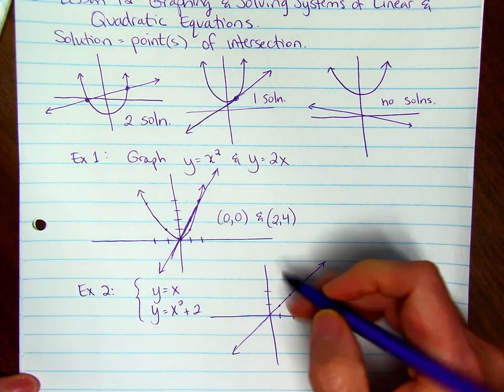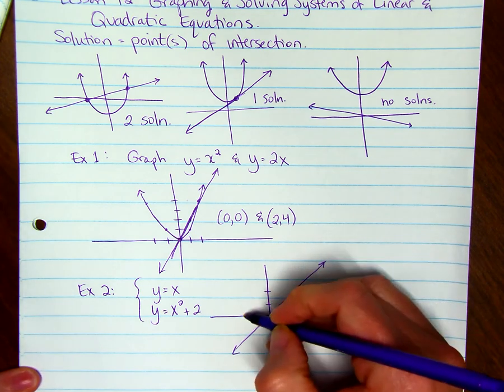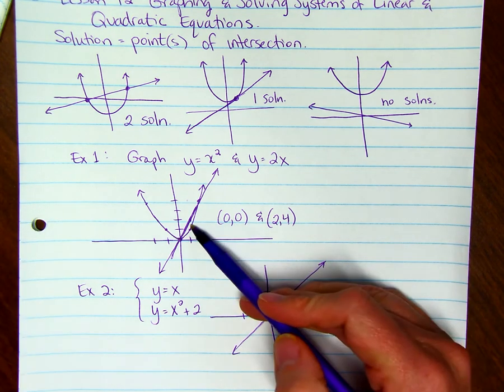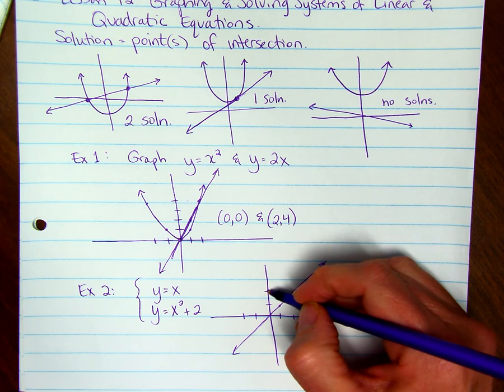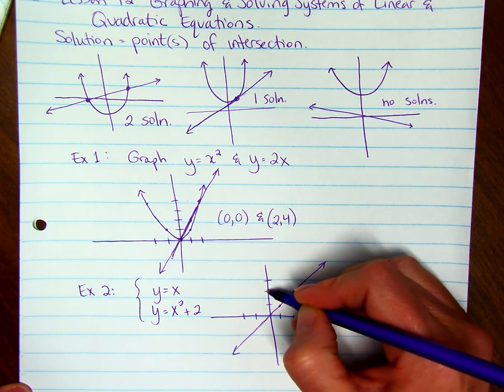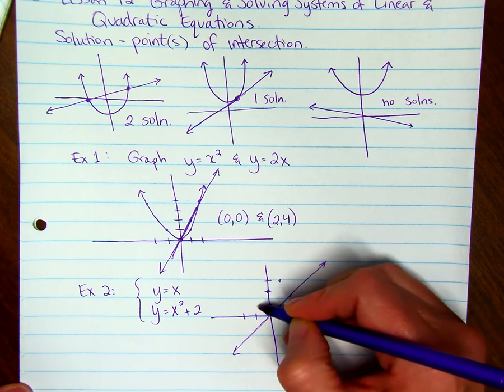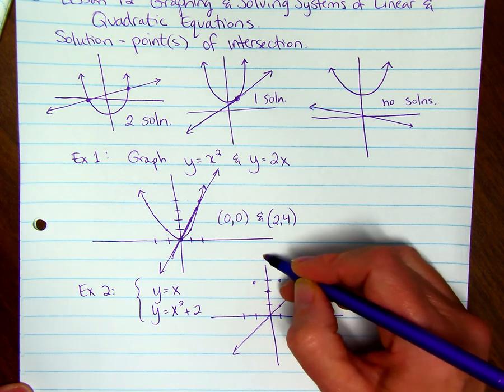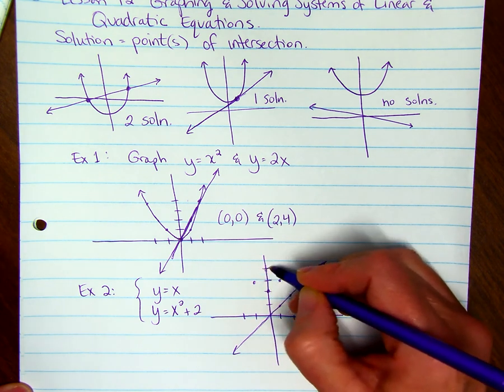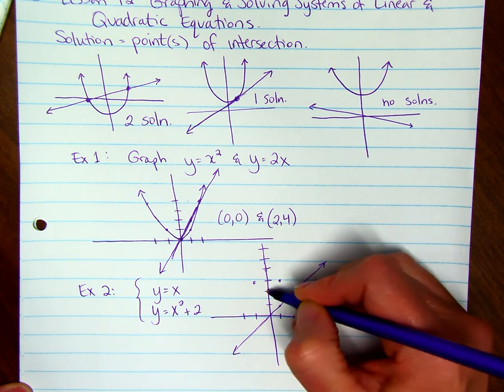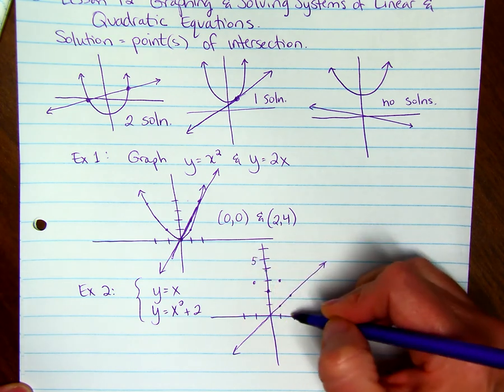y = x² + 2 is a parabola that is just like y = x² but it goes up 2 units. So it's (0,2), (1,3), and (2,6).